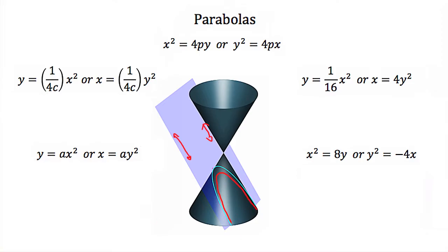Now, if we say that the vertex of our parabola is at the origin of an x and y axis, then we can write the equation of every parabola that has the same vertex in standard form. This standard form is written as x squared is equal to 4py, or y squared is equal to 4px, depending on which direction your parabola will open. Some textbooks also use the standard form of y is equal to 1 over 4c times x squared, or x is equal to 1 over 4c times y squared.